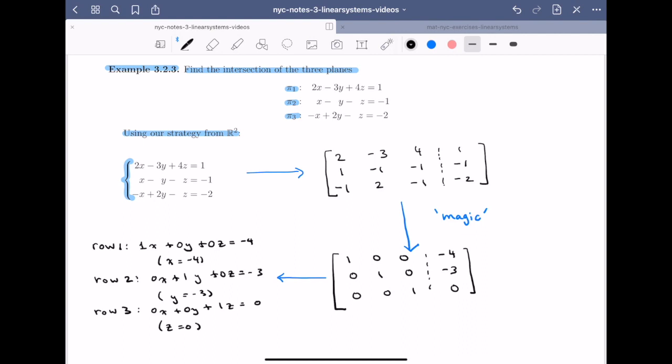It's always nice to organize your work at the end of a problem, so the solution is x equals minus 4, y equals minus 3, and z equals 0.